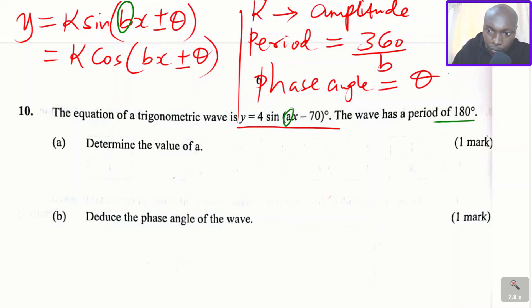Given that the period of this wave is 180, how do we get the period? I've just indicated here. The period is given by 360 divided by b, and you're given that the period is 180. So when you solve this equation, we'll be able to get the value of b. And in this case, in this equation that you have here,